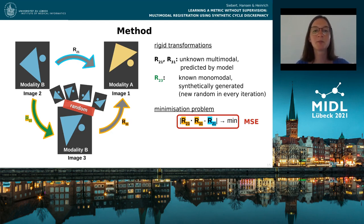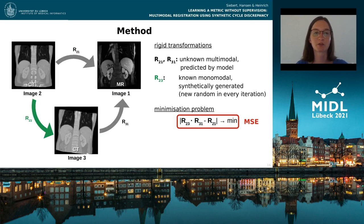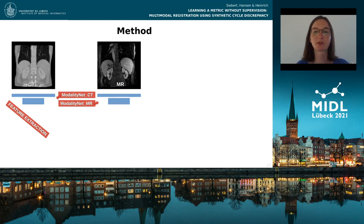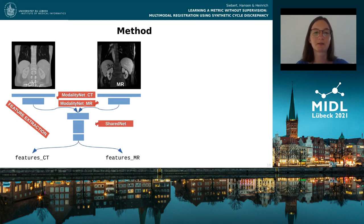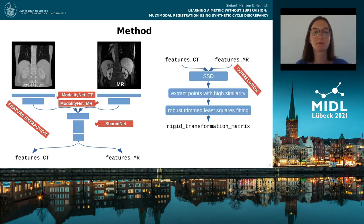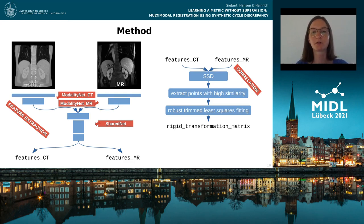For our work, we perform image registration from CT images to MR images. We include this learning concept in our method that first extracts features from CT and MR using a CNN architecture that initially has separate encoder blocks for each modality, followed by shared weights within the last layers. The obtained features within the modality-independent space are fed patchwise into the correlation layer with trainable weights. We correlate the features by patchwise calculating the sum of squared differences and extract grid points with high similarity, which are used to define pointwise correspondences to calculate the rigid transformation matrix with a robust trimmed least squares fitting procedure.